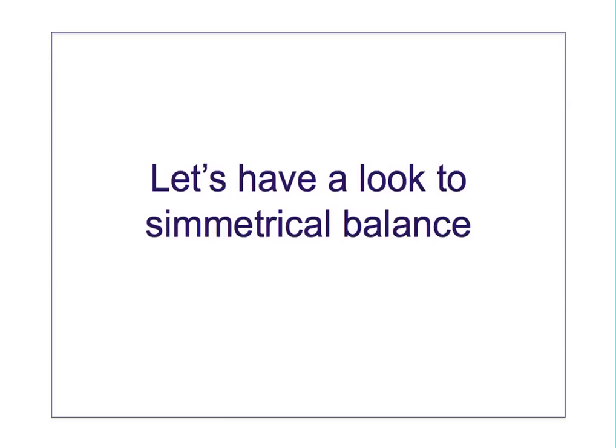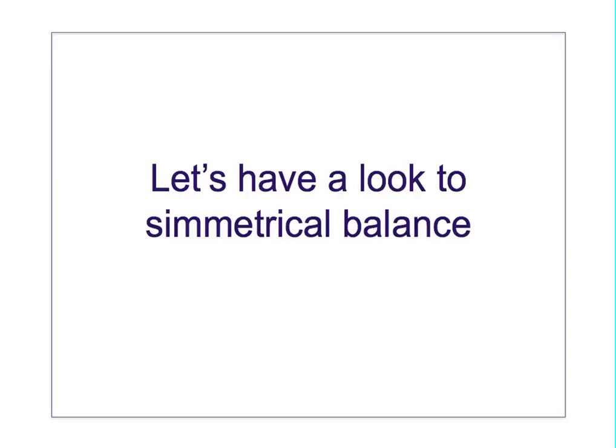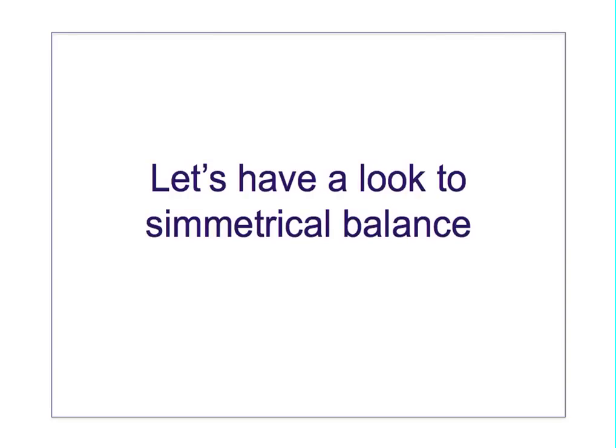Let's see a couple of symmetrical examples on real windows. I want to show you two windows in which symmetry is used differently. So in this first one, by dividing the window in two halves, we can see how the same type of props have been used.